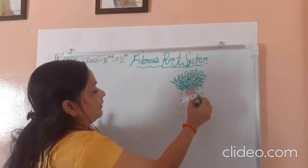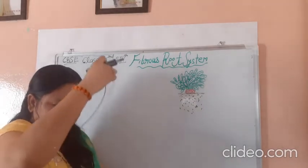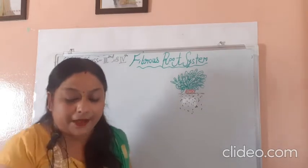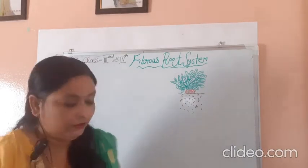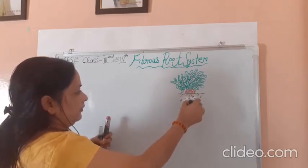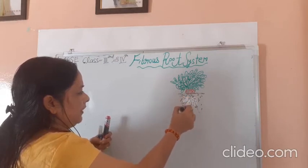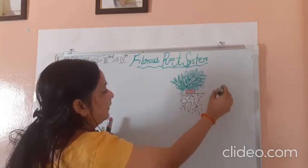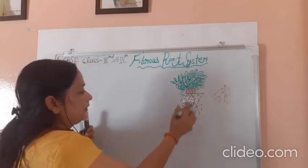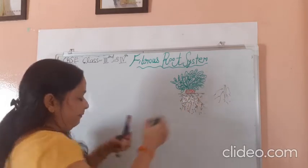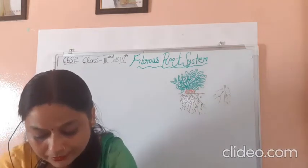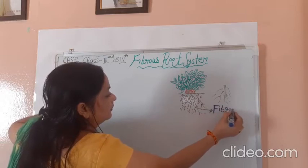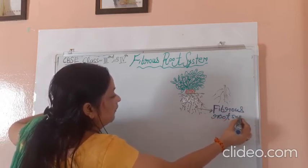You can see on your screen a very clear diagram of the fibrous root system. This is the ground. The fibrous roots do not have a main root. Compare this to the tap root system, which has a main root with tiny tiny branches arising from it. But here, in the fibrous root system, there is no main root — this is called fibrous root.